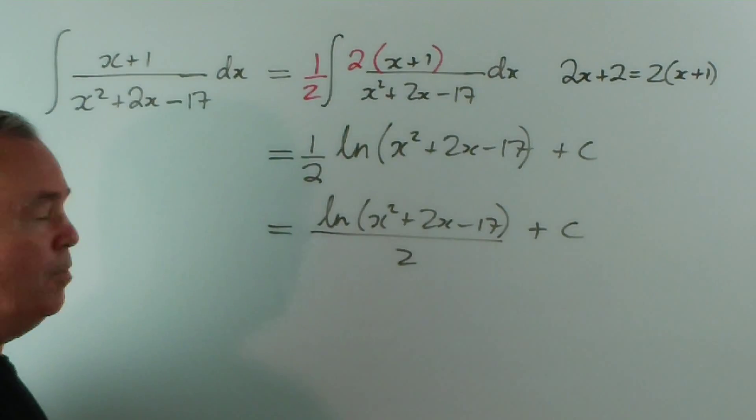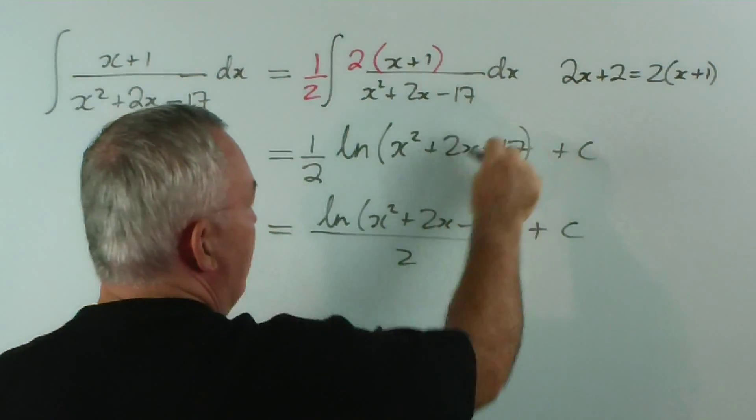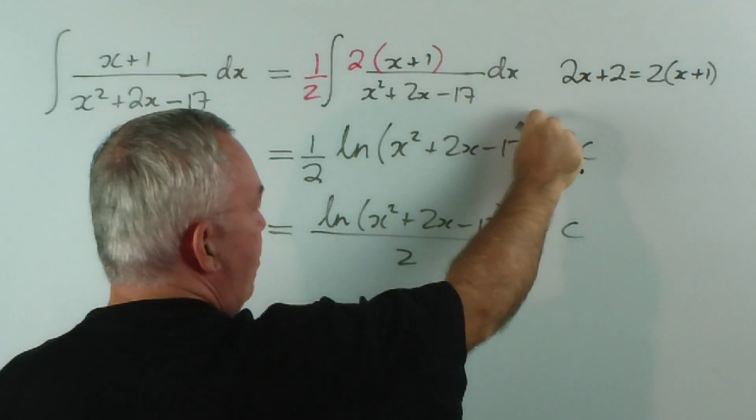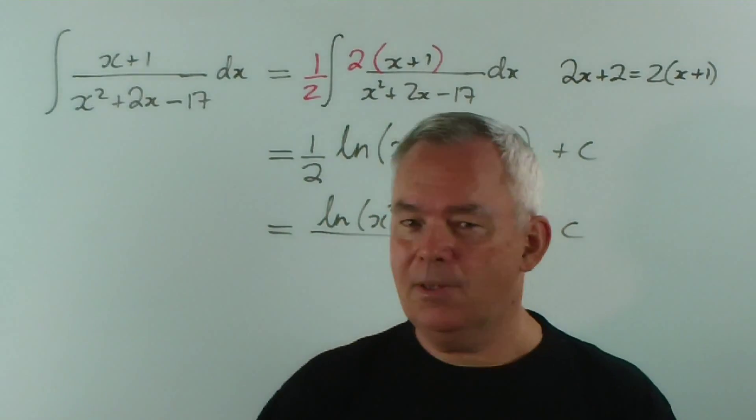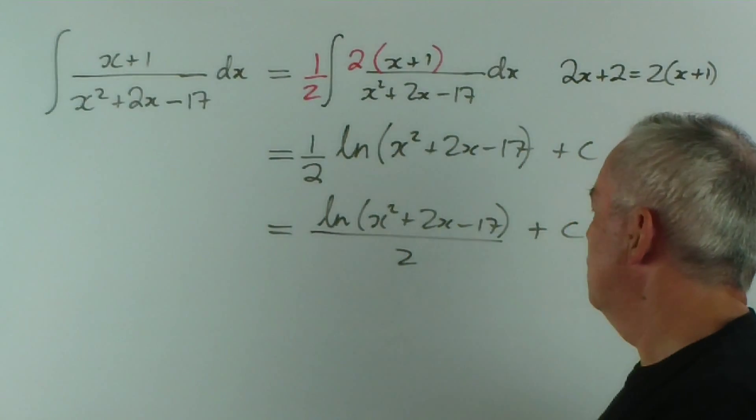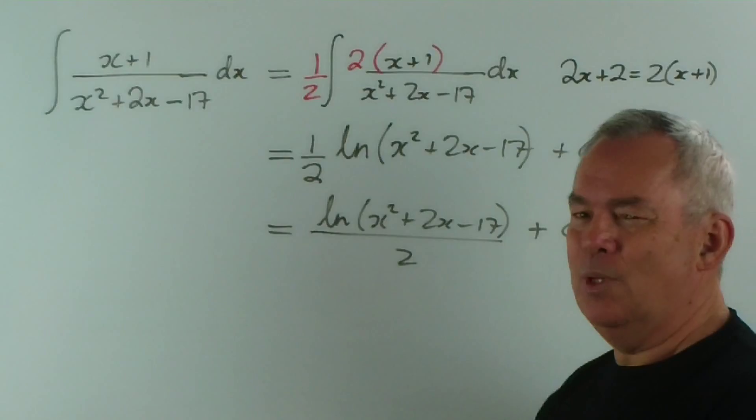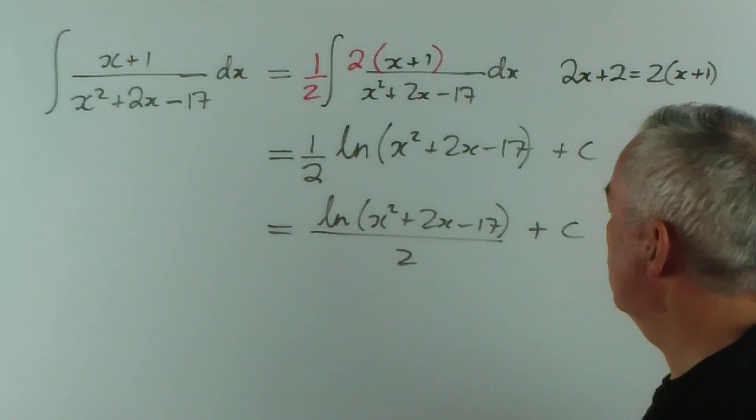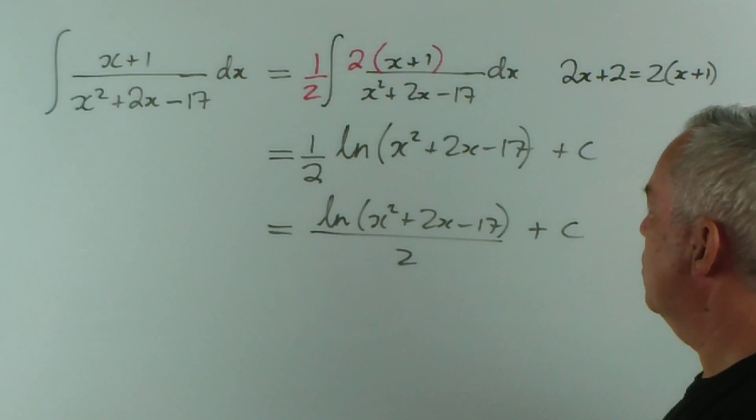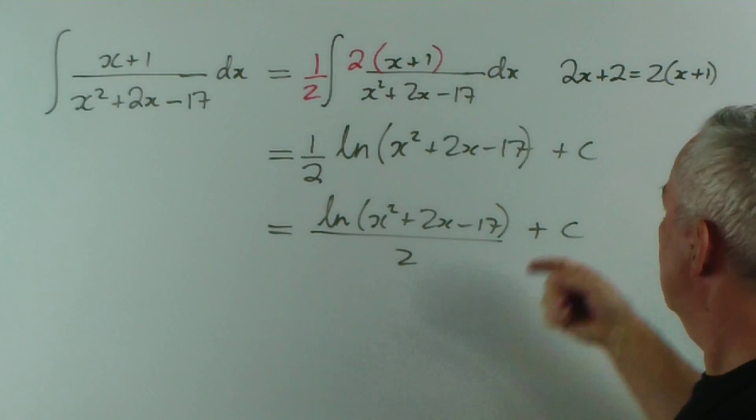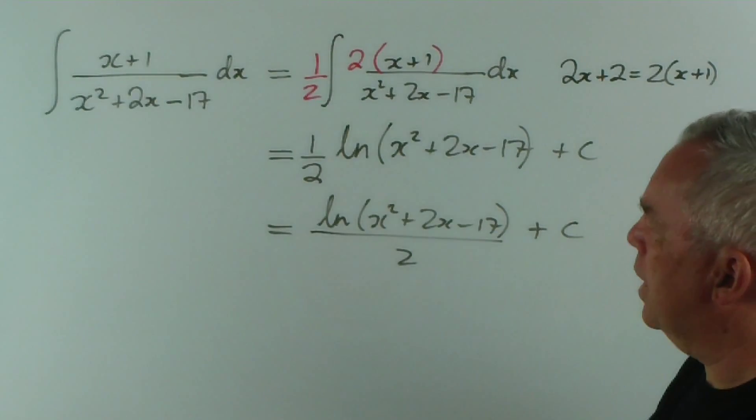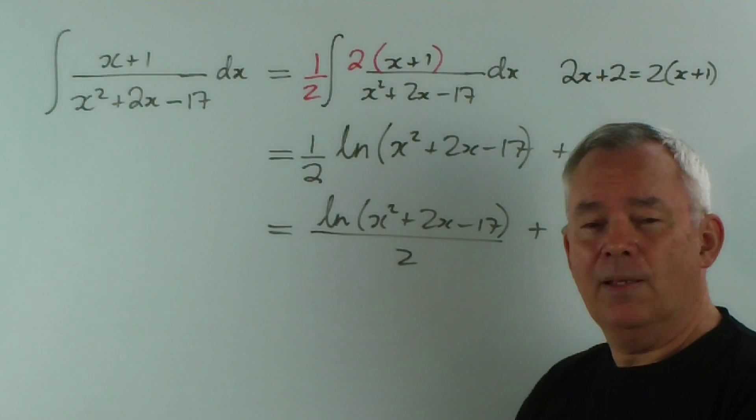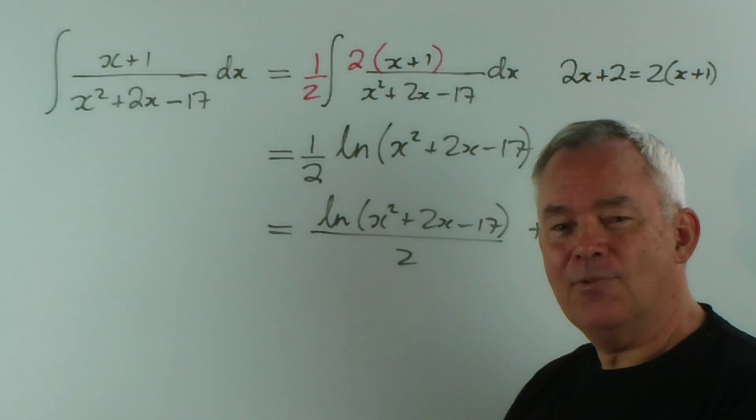That would be my preferred method. You could take this inside, if you know your logarithms, as a power of 1 half. So, log of the square root of (x squared plus 2x minus 17), but I think that could be a bit messy with substitution and the like. This is probably the best way to leave it. So, whichever is your preference, but that's how we would tackle that particular integral. Thank you very much for watching.